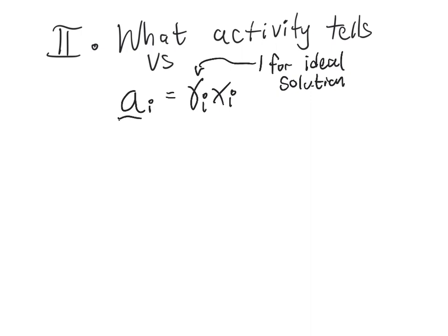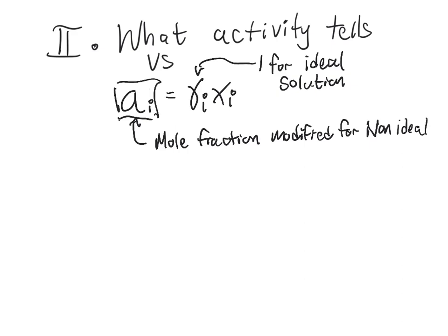So activity is a mole fraction modified to capture how things are non-ideal. Okay so when things are ideal it's just x and when otherwise it's not. And the way that it is modified is it responds to intermolecular interactions in more realistic ways than ideal solution does.